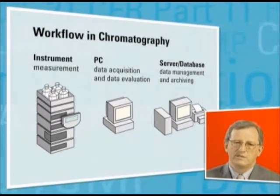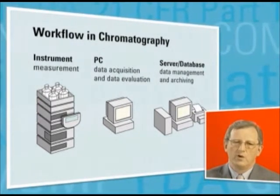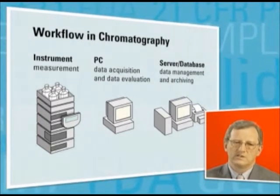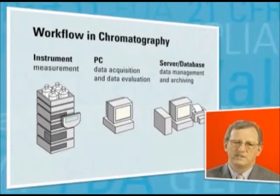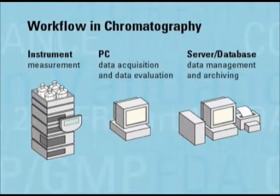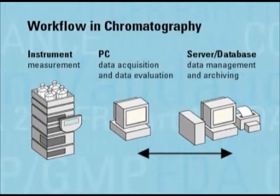There are many types of possible variations. For example, you may have more than one instrument connected to the computer, you may have more than one person working on the computer, and you will certainly have more than one system connected to the network. For reprocessing, the data is transferred back to the chromatography PC, and after reprocessing, the data is transferred to the server again. The PC is usually the location where data is saved for the first time on a durable storage device, typically on the PC's hard disk.